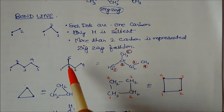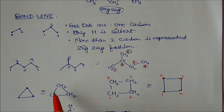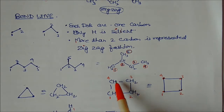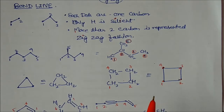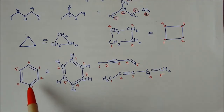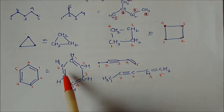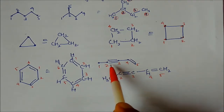For a ring structure, the bond line notation shows it as a triangle form, which in condensed form is CH2-CH2. Similarly, for a four-carbon ring it would be CH2-CH2-CH2. You can also see these condensed formulas compared to their bond line equivalents, such as a carbon-carbon double bond written in condensed form.